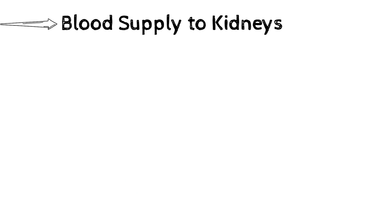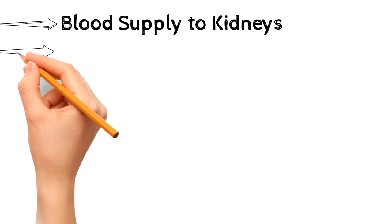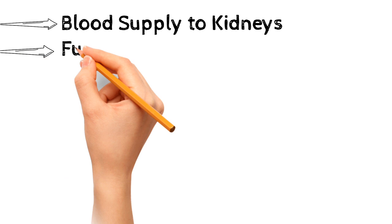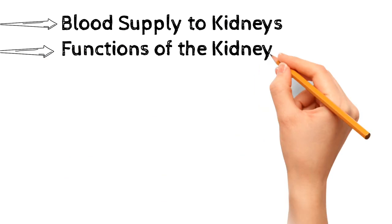Functions of the kidney: first, excretion of water and waste products of protein metabolism; second, excretion of excess salt; third, excretion of harmful substances, drugs, and toxins; fourth, the kidney regulates the pH of blood.